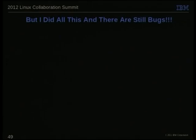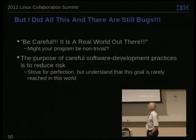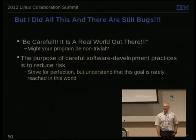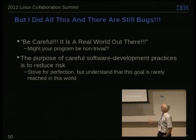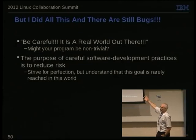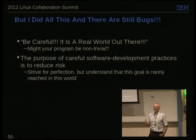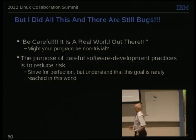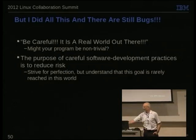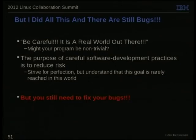Even after doing all this, there are still bugs. The purpose of validation is not to make a perfect program — if you want a perfect program, write a trivial program. The idea is to reduce risk. Yes, strive for perfection, but don't let the imaginary perfect be the enemy of the useful good. And even if you know bugs are inevitable, you still have to fix them.